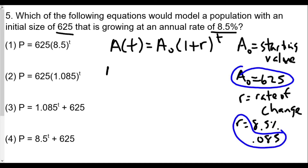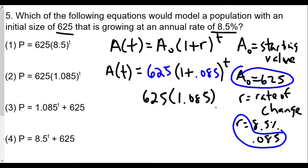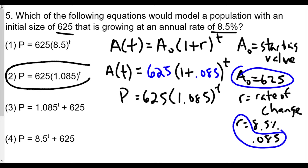So a(t) = 625 × (1 + 0.085)^t, which simplifies to 625 × 1.085^t. The problem uses the letter p for population, and this matches up with choice number 2. Remember: 1 plus the rate for growth, and 1 minus the rate for decay.